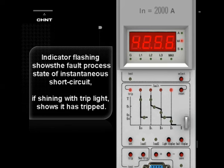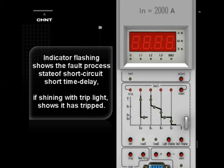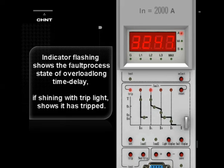Indicator Light: Flashing shows that the fault processing state is an instant short circuit. If shining with the trip light, it shows that it has been tripped. Indicator: Flashing shows the fault processing state of instantaneous short circuit time delay. If shining with the trip light, it shows that it has been tripped. Indicator: Flashing shows the fault processing state of overload long time delay.